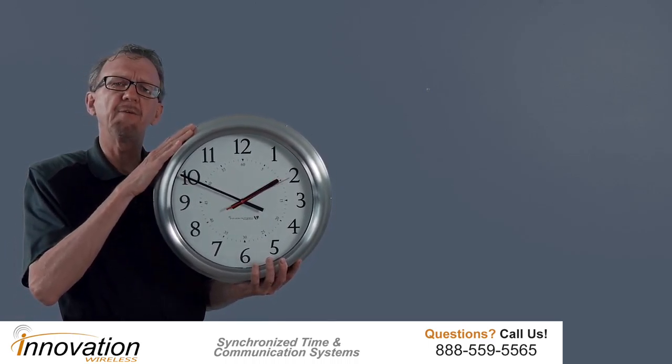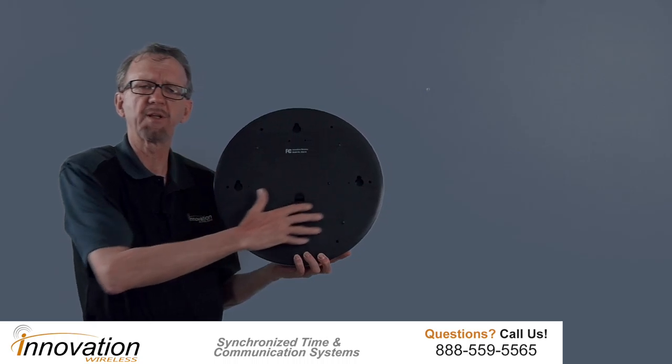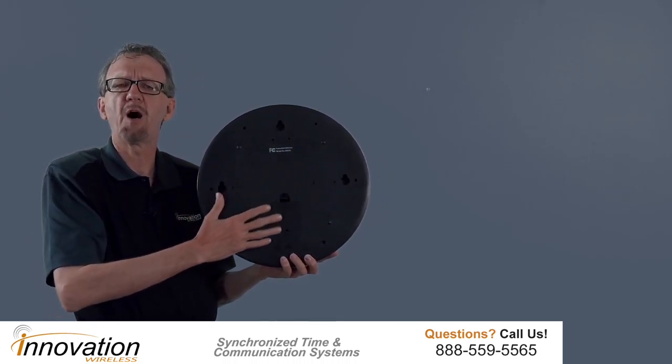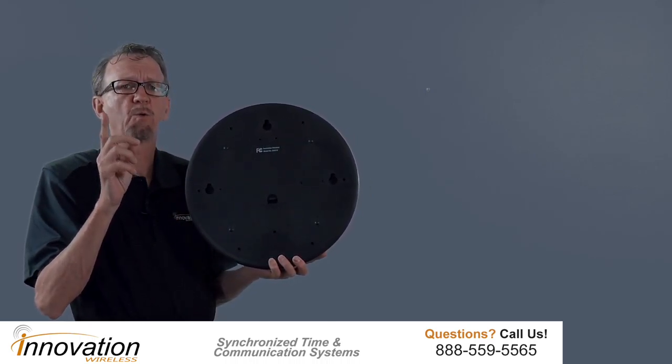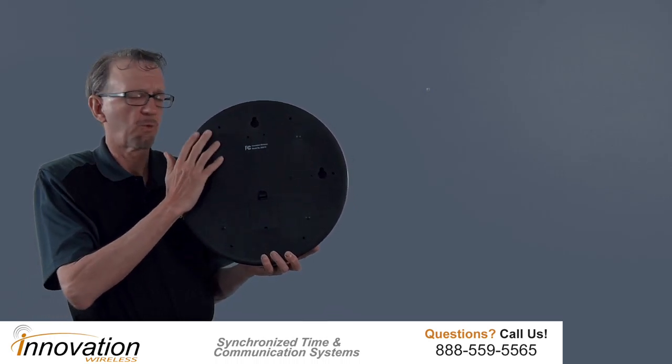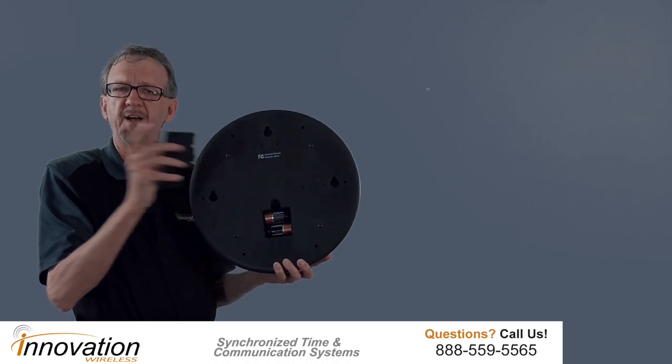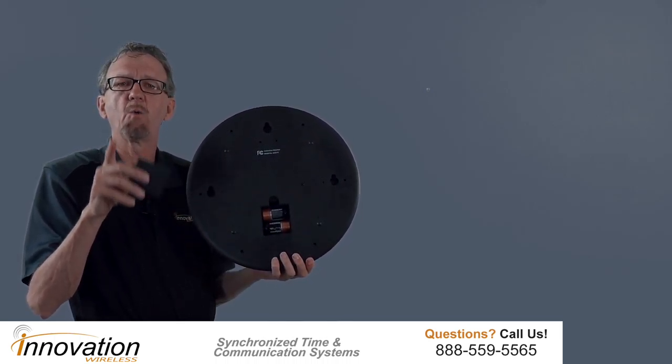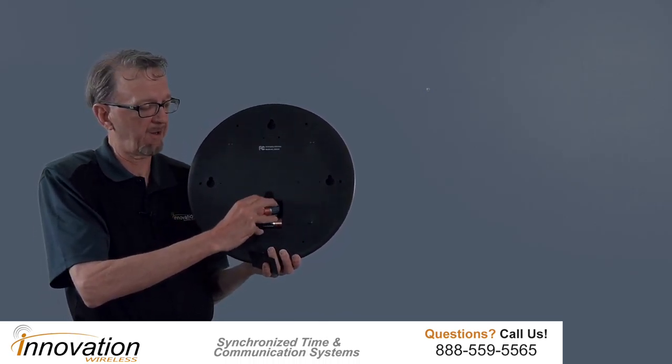When you receive a brushed aluminum clock from us and you take it out of the box, one of the first things you're going to notice is that the back is completely covered. The reason is most clock manufacturers do not cover the back completely. We find it a critical step. The reason we cover the back completely is to protect the electronics from dust and dirt. Protect the electronics from dust and dirt and your clock will last a very long time.